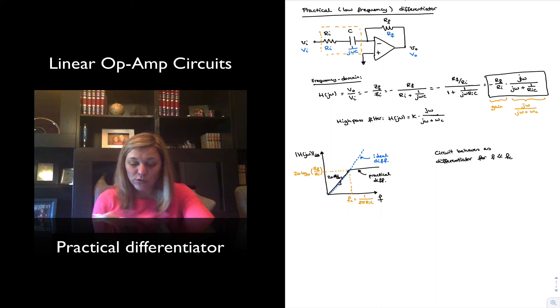Something else to notice is that in the case of the practical integrator, it was Rf and capacitor C that determine the value of the cutoff frequency, and Rf and Ri determining the gain in the passband. Whereas in this circuit, it is Ri that interacts with C to determine the cutoff frequency, and Rf and Ri again determine the gain of the circuit.